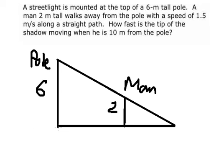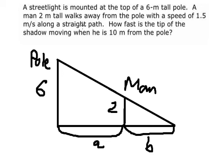So this one, I will put as a. This one, I will put as b. The man walks away with the speed 1.5. He goes in this way. So the question: how fast is the tip of the shadow moving when he is 10 meters from the pole? So 10 here.